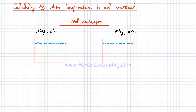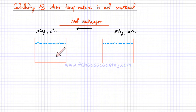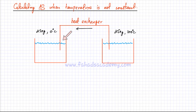Heat flows from the right-hand beaker to the left-hand beaker because the right-hand beaker is hotter at 100°C and the left-hand beaker is colder at 0°C — heat flows from the hotter side to the colder side. Now I'm going to first focus on the left-hand beaker which contains 250 grams of water at 0°C, and the right-hand beaker also has 250 grams of water at 100°C. If I want to estimate what the final temperature of both beakers is going to be...